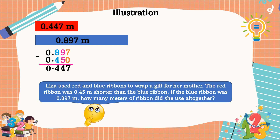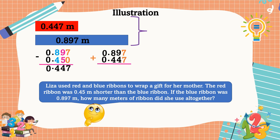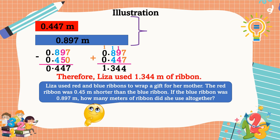Therefore, the length of the red ribbon is 0.447 meter. Now, to find how many meters of ribbon she used altogether, we add the blue ribbon and the red ribbon: 0.897 plus 0.447. Adding: 7 plus 7 is 14, write 4 and regroup 1; 9 plus 4 is 13, plus 1 is 14, write 4 and regroup 1; 8 plus 4 is 12, plus 1 is 13, write 3 and regroup 1; 1 plus 0 plus 0 plus 1 is 1. Copy the decimal point.